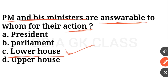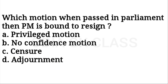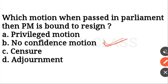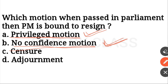Which motion, when passed in Parliament, makes the Prime Minister bound to resign? If the no-confidence motion or privilege motion is passed in Parliament, the Prime Minister is bound to resign. A privilege motion can be moved against a colleague in Parliament.